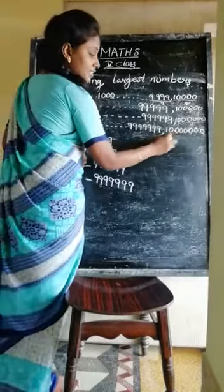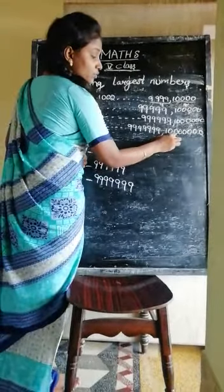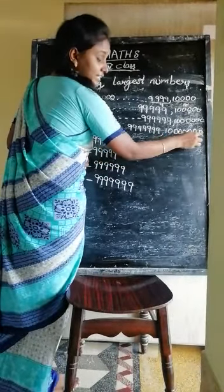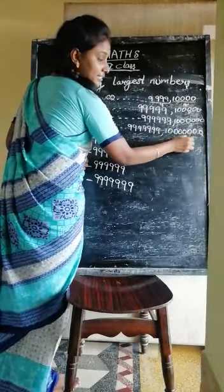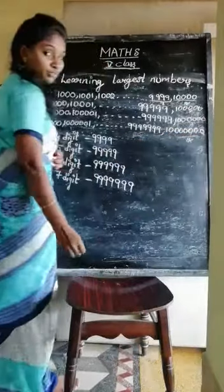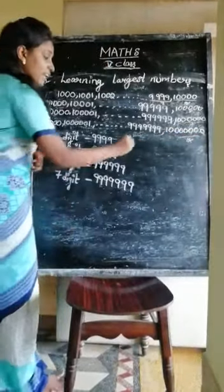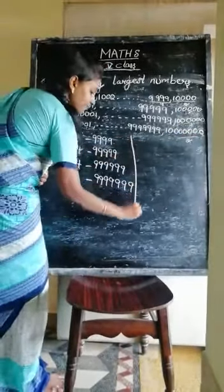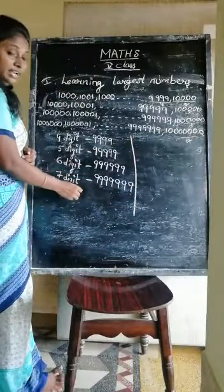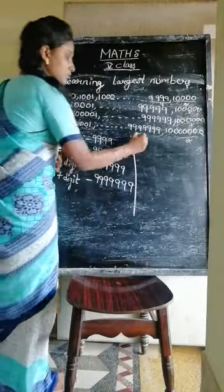And it is the 8-digit number — 1, 2, 3, 4, 5, 6, 7, 8. It is the 8-digit largest number, so it is not a countable 7-digit number. Up to now we have completed the largest numbers.